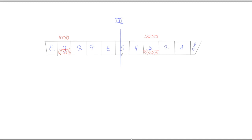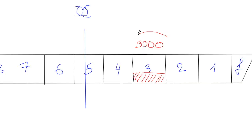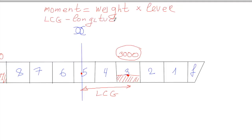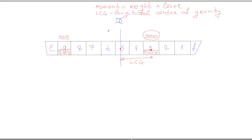When we talk about trim, the parameter which defines the direction of trim is not the weight but the trimming moment. The moment equals weight multiplied by lever. The weight is 3,000 tons, and the lever — attention — is the distance between the middle of the vessel and the center of gravity of the cargo hold. This parameter is called LCG — Longitudinal Center of Gravity.